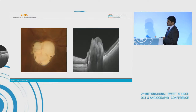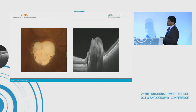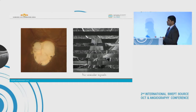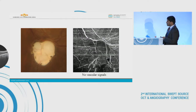This is a yellowish-white lesion which is abruptly elevated from the retinal surface and appears to be intra-retinal on OCT — so probably a glial cell tumor, possibly an astrocytoma.